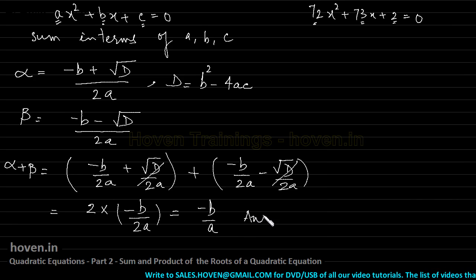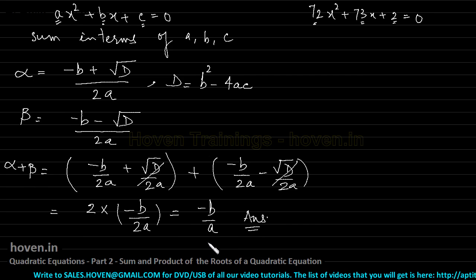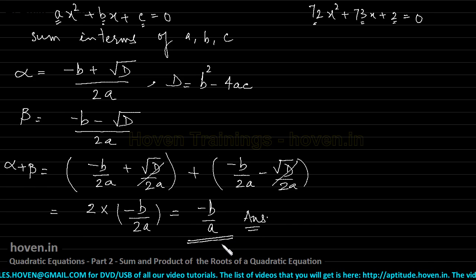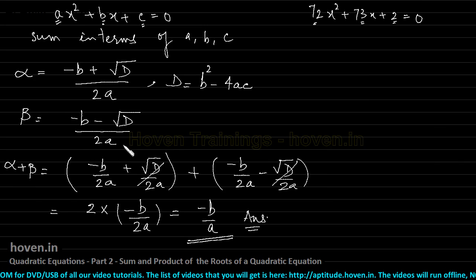So we can write them as 2 multiplied by minus b by 2a, which eventually becomes 2 and 2 also cancel minus b by a, which is the formula for the sum of the roots of a general quadratic equation. Now you can observe that this formula has been simplified to ground zero.